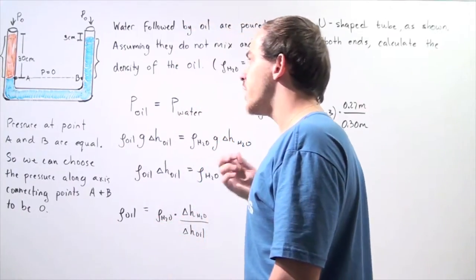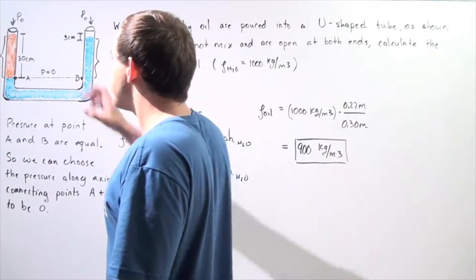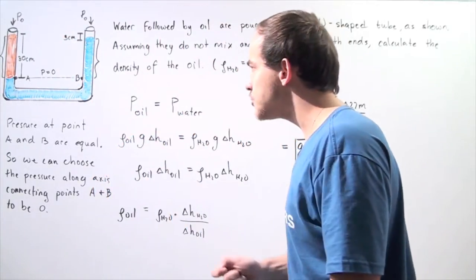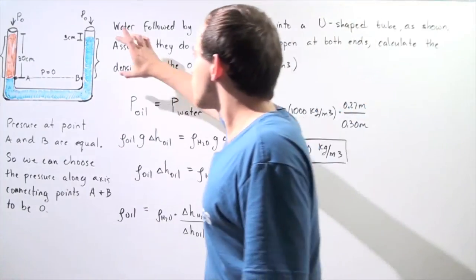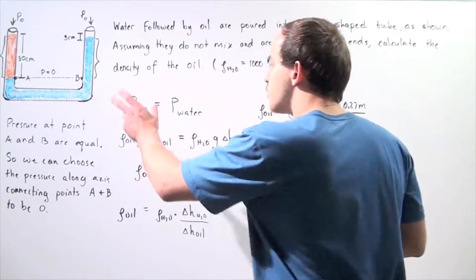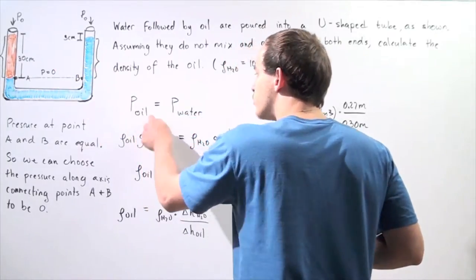So once again, the pressure created by the oil that has a vertical distance of 30 centimeters is equal to the pressure created by the water, which has a vertical distance of 27 centimeters. So the pressure due to the oil is equal to the water.